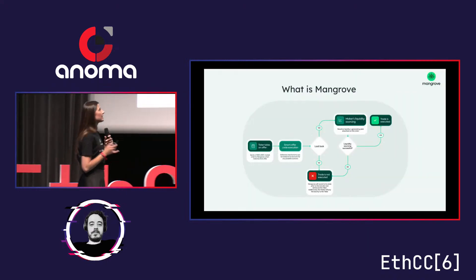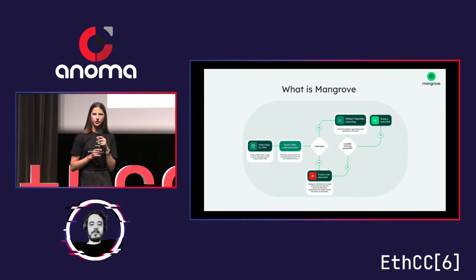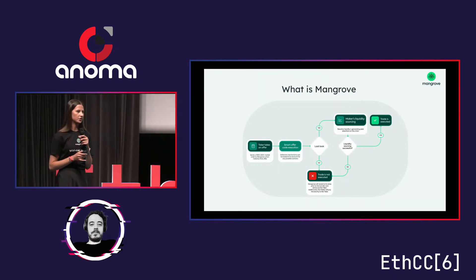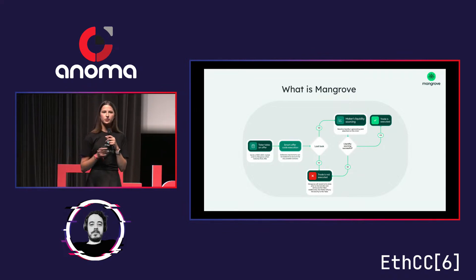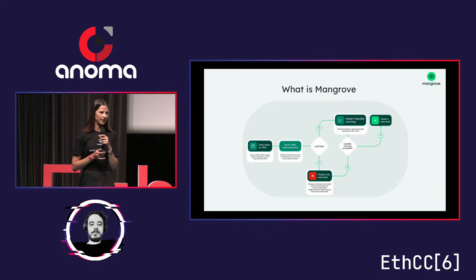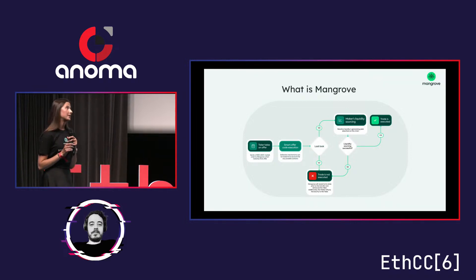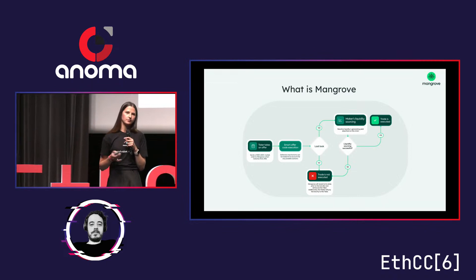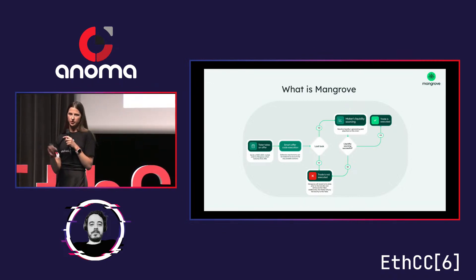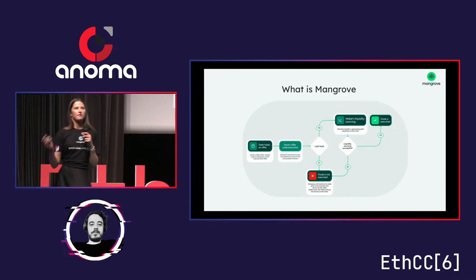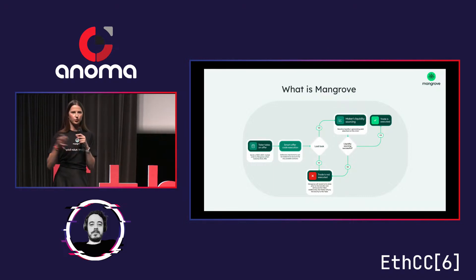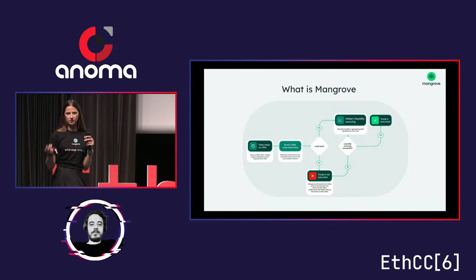I'd like to dig a little deeper into smart offers and how transactions occur at Mangrove. Whenever an offer is matched, the smart offer code execution starts with last look. The last look code checks whether it's actually beneficial to fulfill an offer, because by the time the offer was matched, market conditions might have changed. If the code detects that it's beneficial, we move to the second part: liquidity sourcing. Depending on whether liquidity sourcing is successful or not, the trade will be executed or not. There could be various reasons for unsuccessful liquidity sourcing — the simplest example being that liquidity was moved elsewhere and when the code tries to source it, it's just not there anymore.